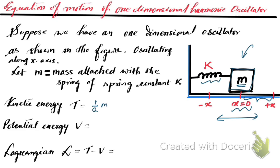The kinetic energy of this system is going to be half m v squared, where v is nothing but x-dot — that is dx/dt. And the potential energy of this oscillator is given by half k x squared.